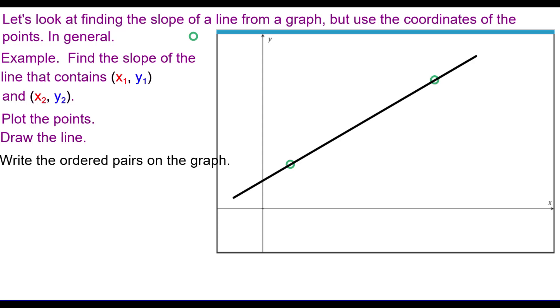Draw the line as we did before. And then we labeled the ordered pairs on the graph. So, again, this was the first one and this was the second one.